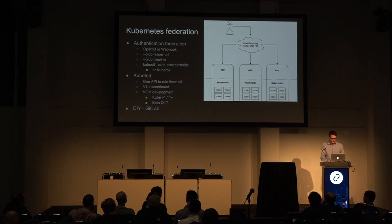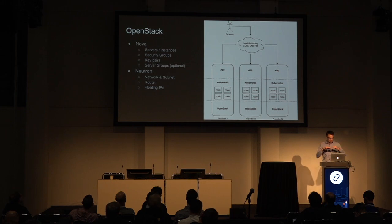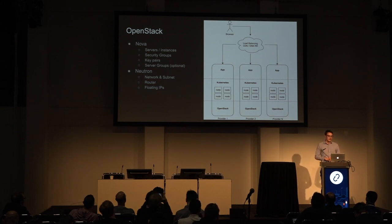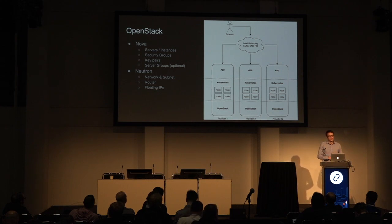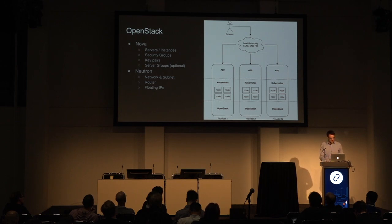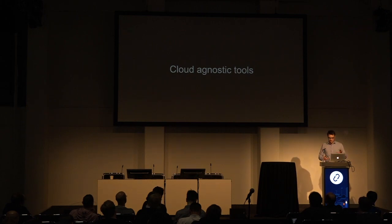Supporting all of that, we have OpenStack providing the infrastructure — in day-to-day terms that means instances, security groups, key pairs, floating IPs, and networks. Each OpenStack region will be completely independent, which is why it's important to have one Kubernetes cluster per location and not stretch across regions — otherwise we'd really break the isolation model. And that's the architecture overview.